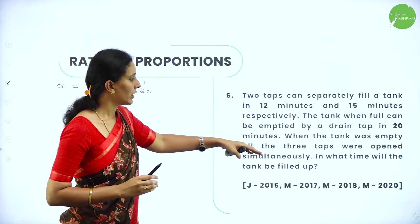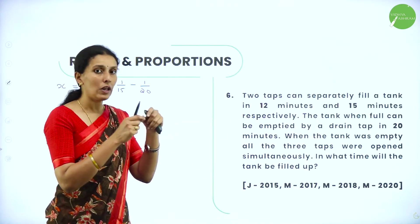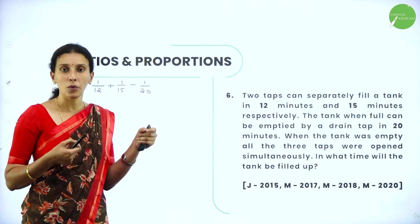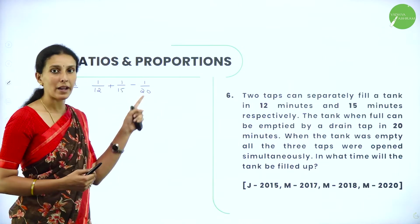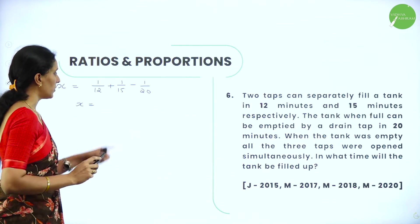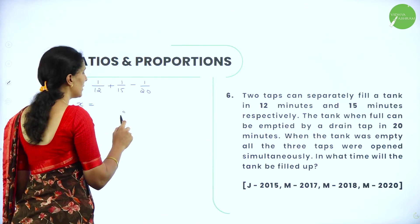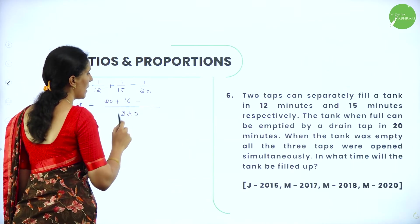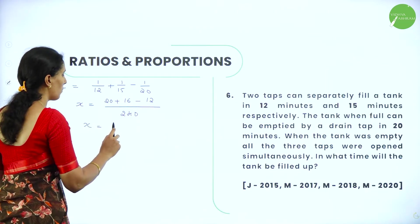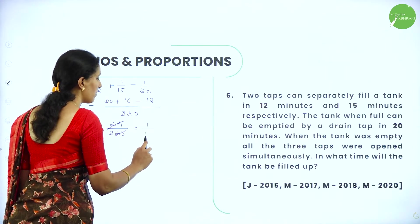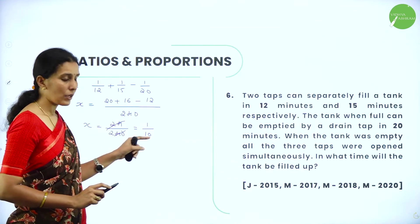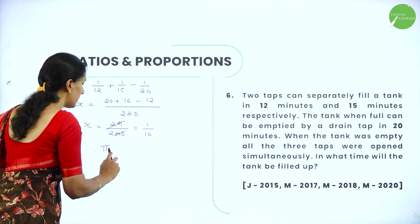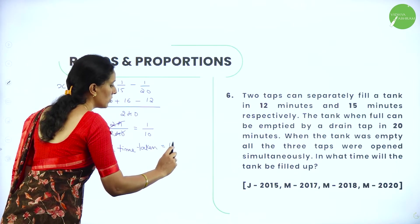When the tank is empty and all 3 taps open, the first 2 taps fill and the third drains. So the net rate is 1 by 12 plus 1 by 15 minus 1 by 20. Taking LCM as 60, we get: 5 plus 4 minus 3 over 60, equals 6 by 60, which is 1 by 10. So for one minute the tank fills 1 by 10th of it. Therefore the time taken to fill the tank completely is 10 minutes.